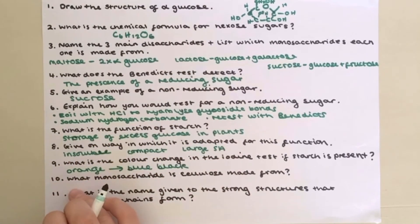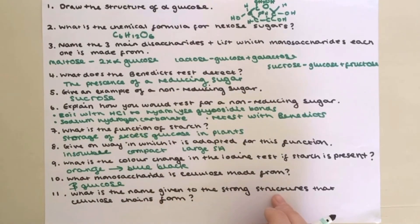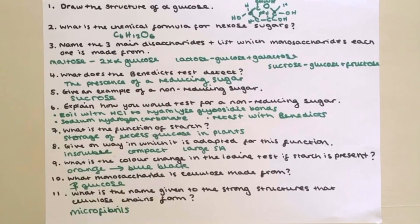Question 10, what monosaccharide is cellulose made from? It is beta glucose. And question 11, what is the name given to the strong structures that cellulose chains form? And that is microfibrils. Thank you for watching.